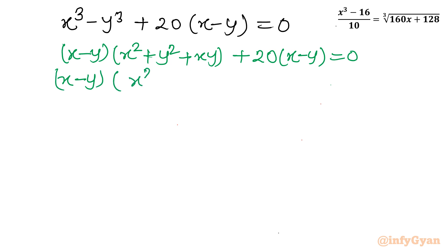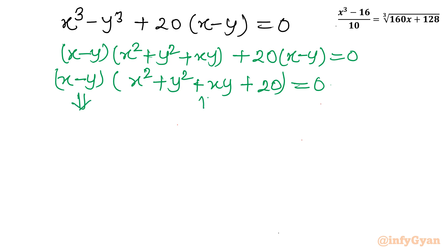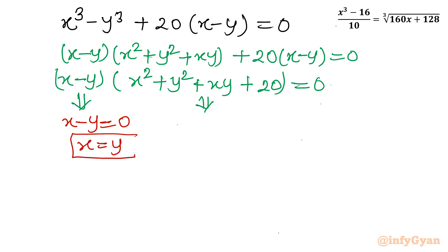Now (x - y) is overall common. Factoring it out gives: (x - y)(x² + y² + xy + 20) = 0. Since f · g = 0, we get two equations. From the first factor, x - y = 0, so x = y. This is our first solution.